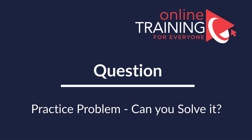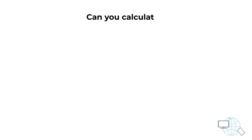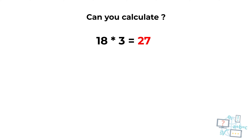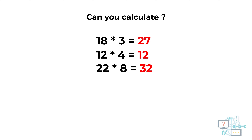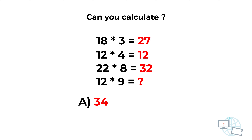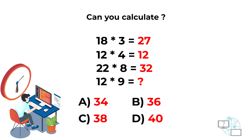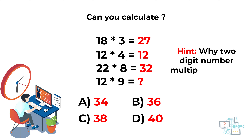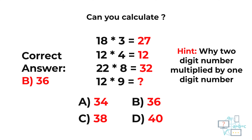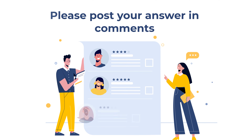Here's a practice question. You're presented with three full expressions: 18 × 3 = 27, 12 × 4 = 12, 22 × 8 = 32. You need to calculate the result of 12 × 9. Choices: A is 34, B is 36, C is 38, D is 40. Hint: notice it's always a two-digit number multiplied by a one-digit number. The correct answer is choice B, 36. Post your solution in the comments.